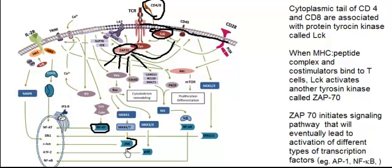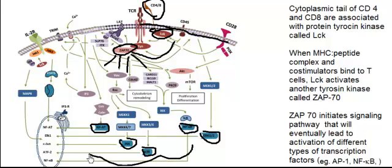These signaling pathways eventually lead to activation of transcription factors. Once those transcription factors enter the nucleus, each one will activate different regions of the DNA, expressing different genes. Different genes mean different cytokines will be produced by these T cells, and different cytokines correspond to different T cell subtypes.